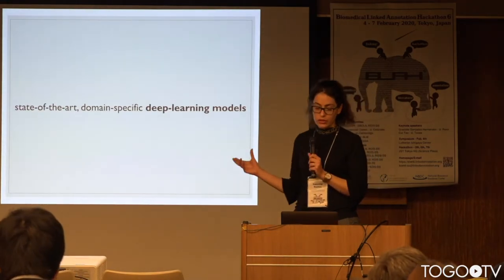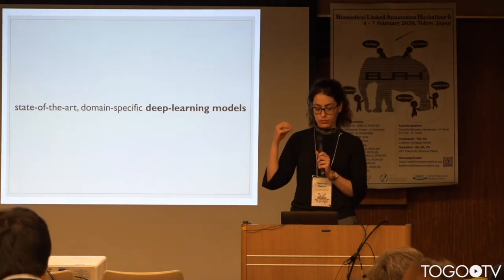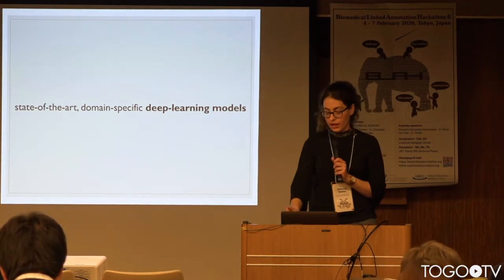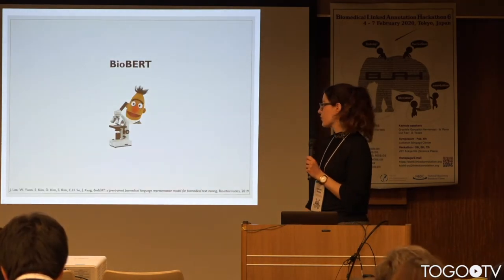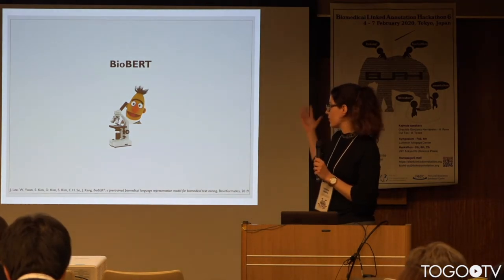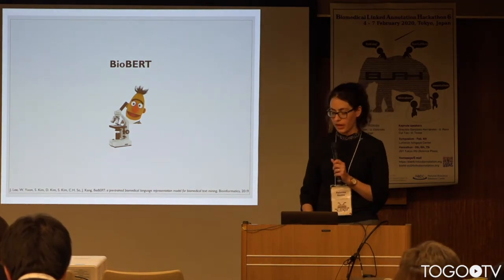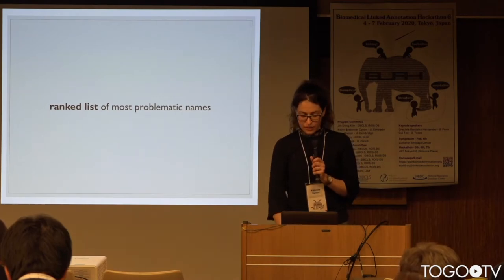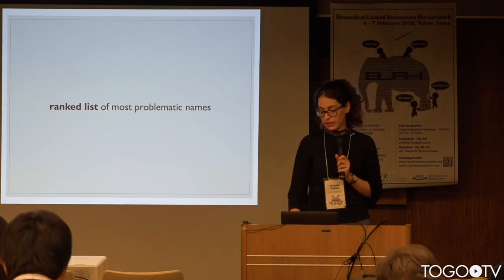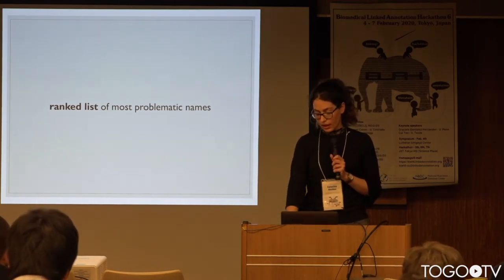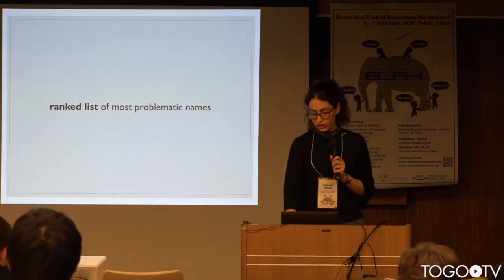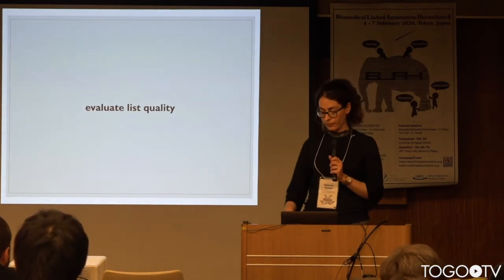After we have this textual context, we will train a state-of-the-art domain-specific deep learning model. Based on recent literature, we plan to use BERT, and specifically BioBERT. We will produce a ranked list of the most problematic names and after we get that list back from the model we will evaluate its quality.